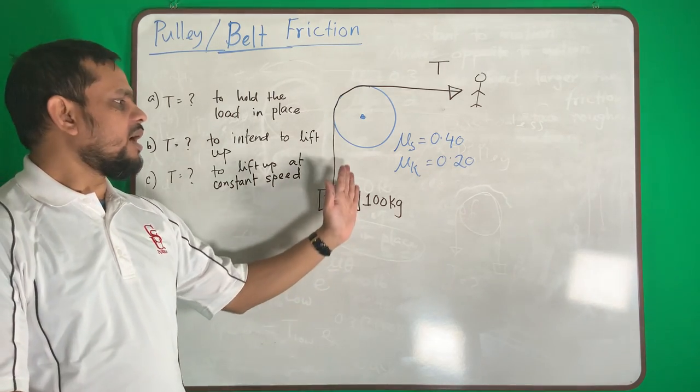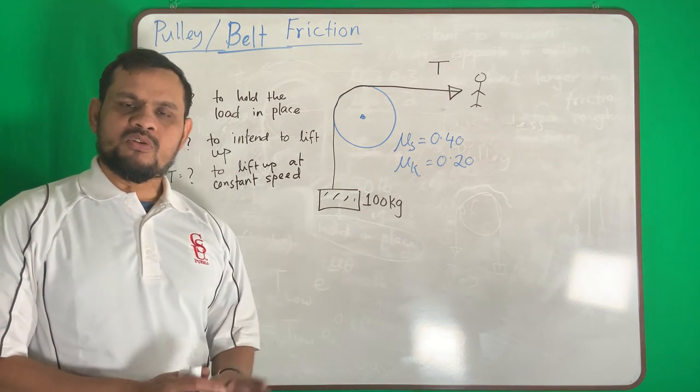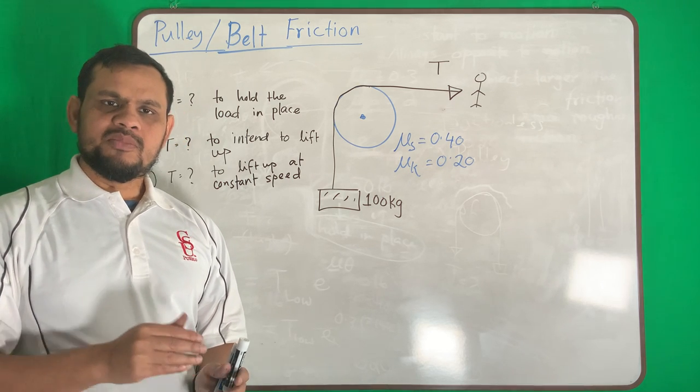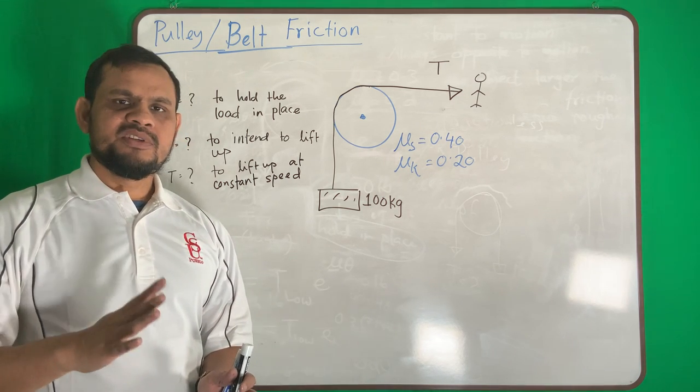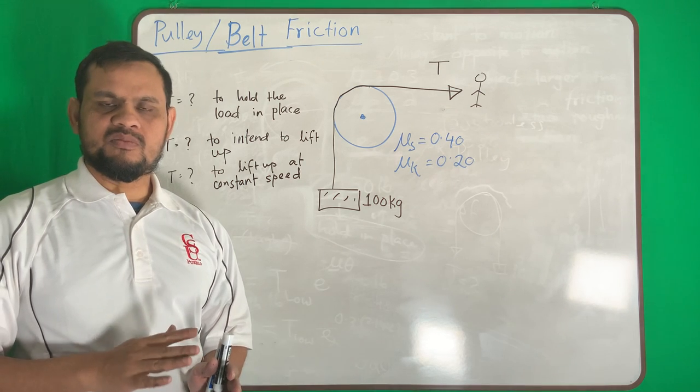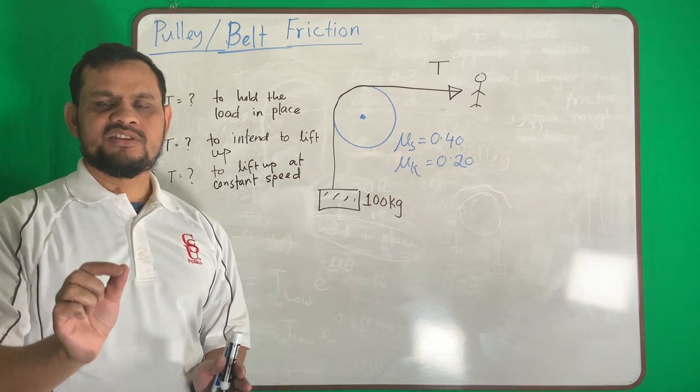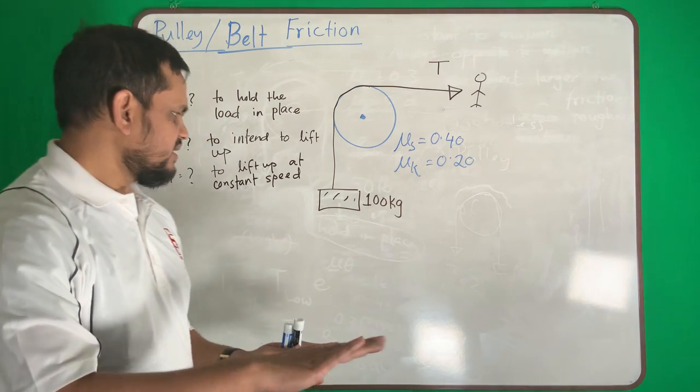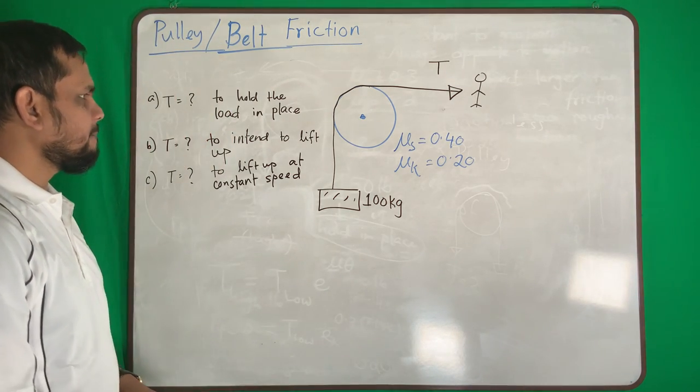This one will go up at a constant speed. Constant speed is also an equilibrium problem. Why? Because constant speed means there is no acceleration. Velocity is constant, no acceleration means no unbalanced force.